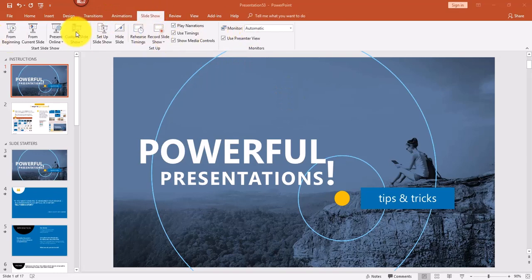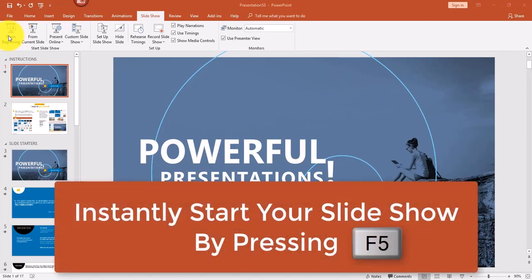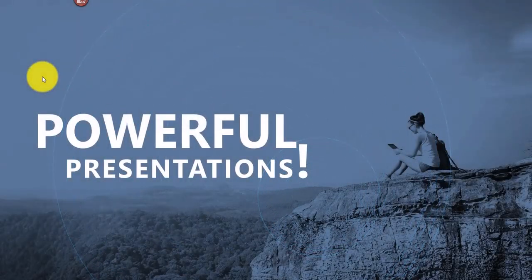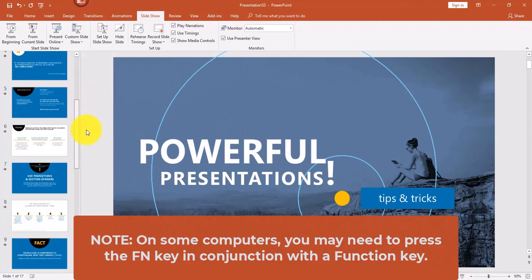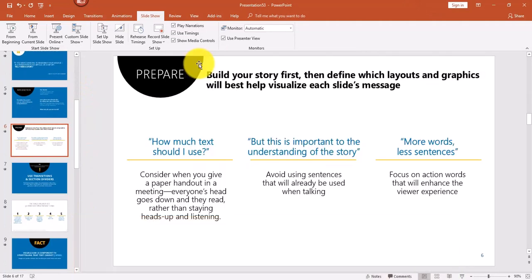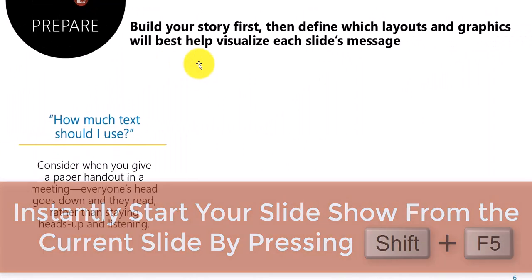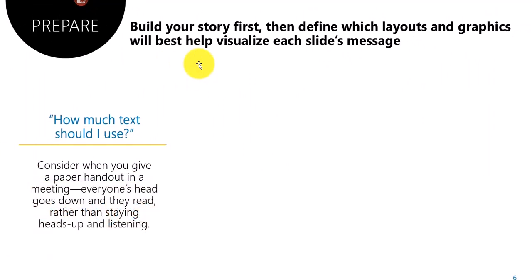Let's talk about the different ways you could run your slideshow. Before I begin, I want to tell you a secret trick: you can instantly start your slideshow anytime with just one key — F5. If you're on a specific slide, say slide six, and you want to start from there, just hold the Shift key down and press F5, and your slideshow will begin on that particular slide.